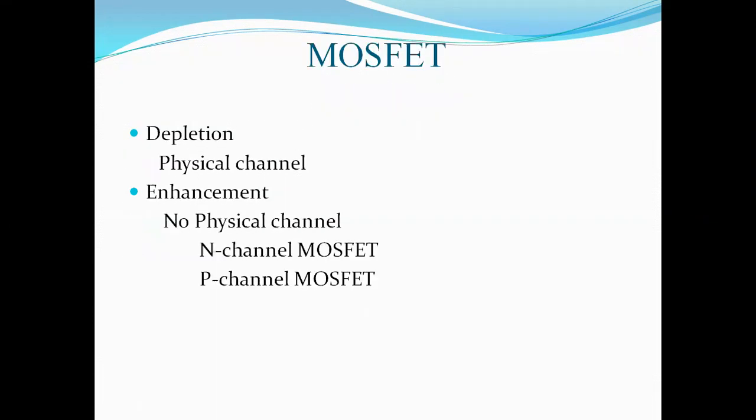There are different types of MOSFET. First is the depletion MOSFET and second is the enhancement MOSFET. In the depletion MOSFET there is a physical channel present between the two same-type materials — two N-type or two P-type — but in the enhancement MOSFET no physical channel is present; the channel must be generated. There are also two types based on channel type: N-channel MOSFET and P-channel MOSFET.